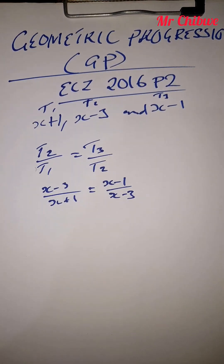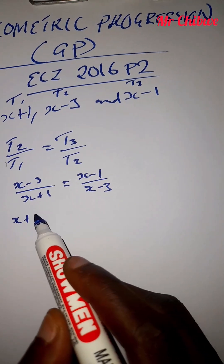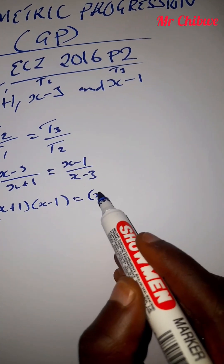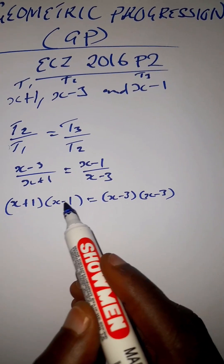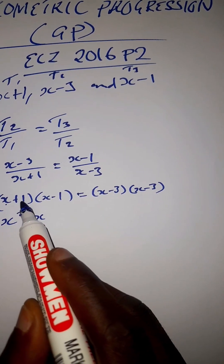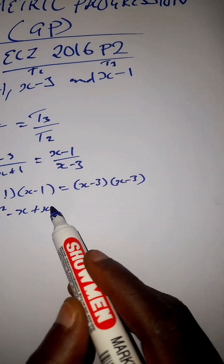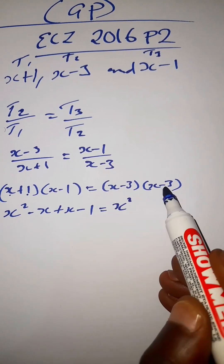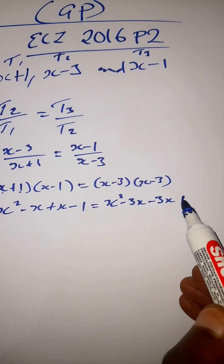You cross multiply. When you multiply, you FOIL. So x plus 1 multiplied by x minus 1 equals x minus 3 multiplied by x minus 3. Expanding the left side: x squared minus x plus x minus 1, giving x squared minus 1. On the right side: x squared minus 3x minus 3x plus 9, giving x squared minus 6x plus 9.